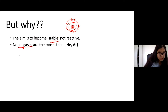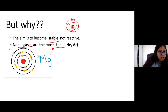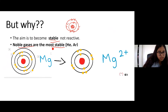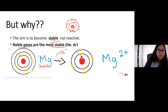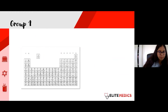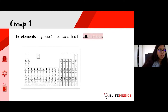This animation shows magnesium as a neutral atom losing its two outer electrons. Once those electrons leave, the atom has a full outer shell of eight and is stable. It's now an ion, but it has achieved stability.